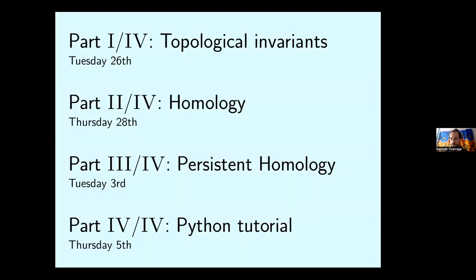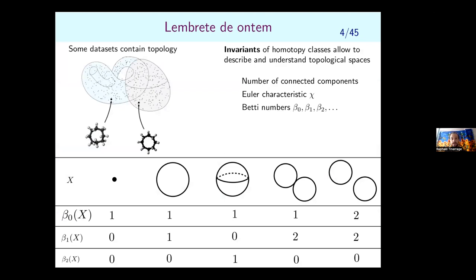Today we will define homology. Last time I gave many invariants of topological spaces — connectedness, Euler characteristic, and Betti numbers, which were the most powerful. The Betti numbers indicate many topological properties, and in order to define them you actually have to define homology. That construction is what we will do today.